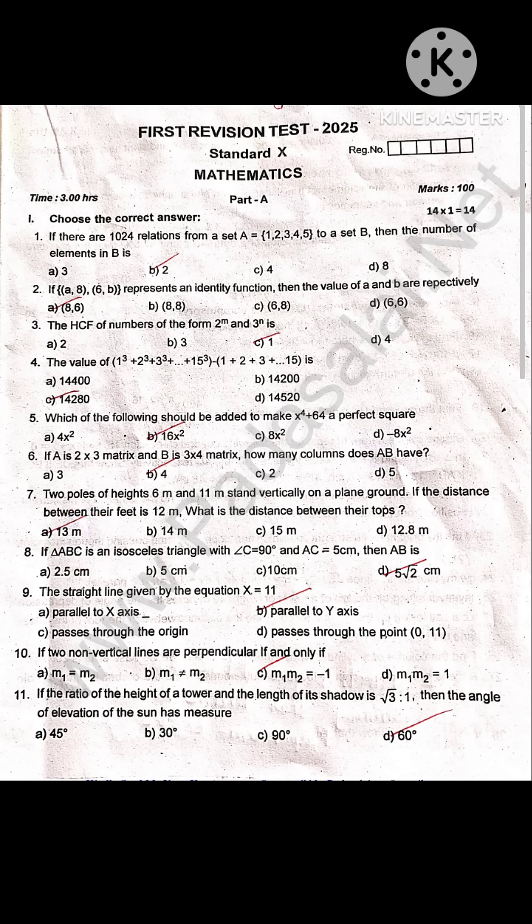If triangle ABC is an isosceles triangle with angle C is equal to 90 degree and AC is equal to 5 centimeter, then AB is 5 root 2 centimeter.